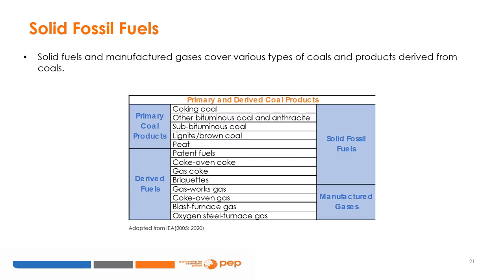Solid fuels and manufactured gases cover various types of products derived from coal. Primary coal is a fossil fuel, usually with the physical appearance of a black or brown rock, consisting of carbonized vegetal matter. The higher the carbon content of a coal, the higher its rank or quality. Derived fuels include both solid fuels and gases produced during coal processing and by coal transformation.